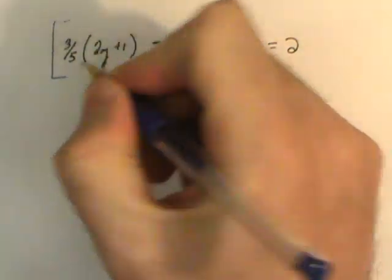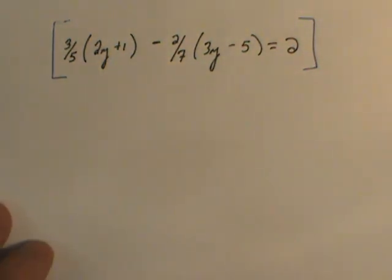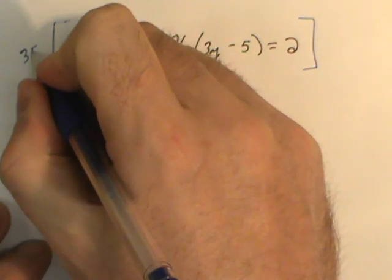And so the first step is to multiply by the common denominator. As I look at the two fractions, I have a common denominator of 35, and so that's what I'll distribute by.